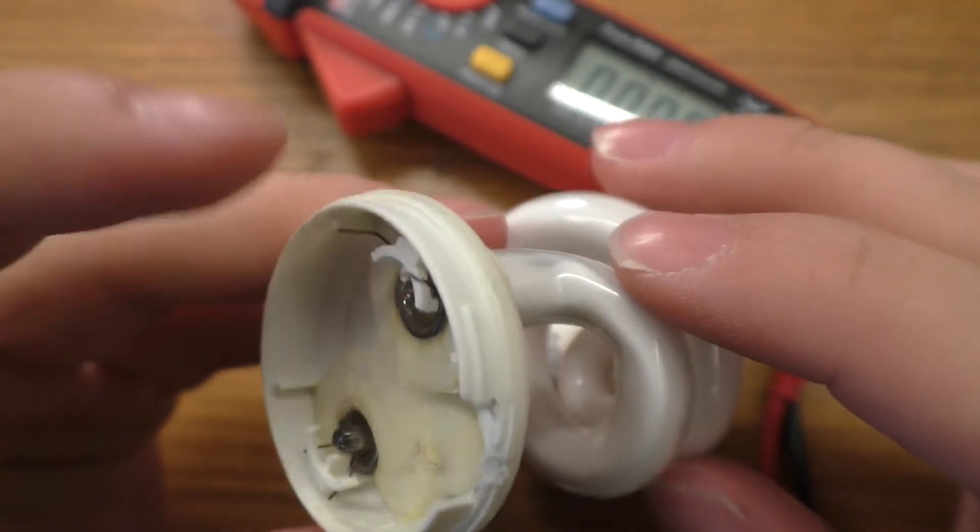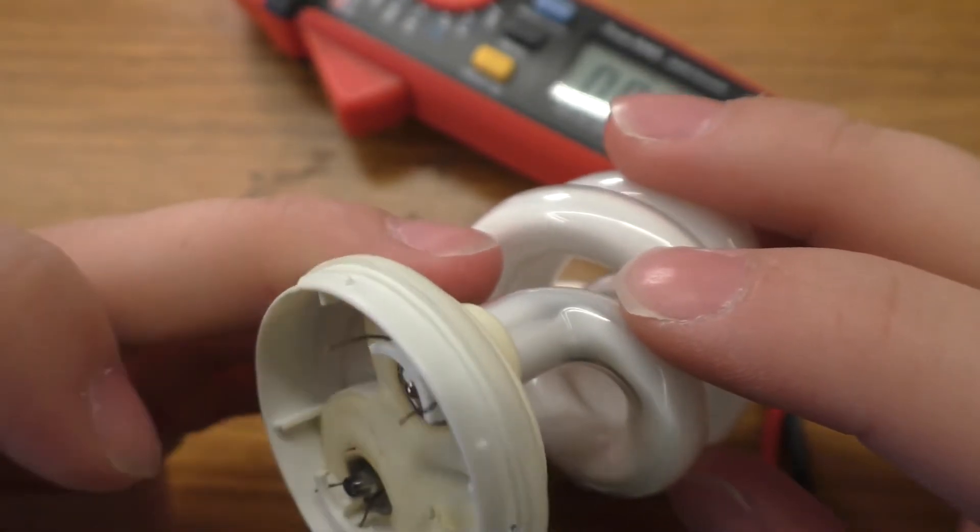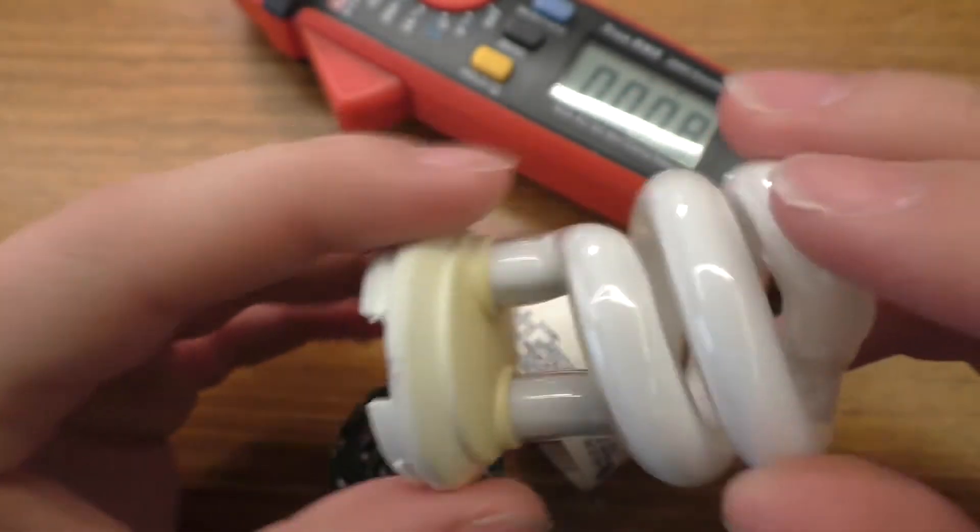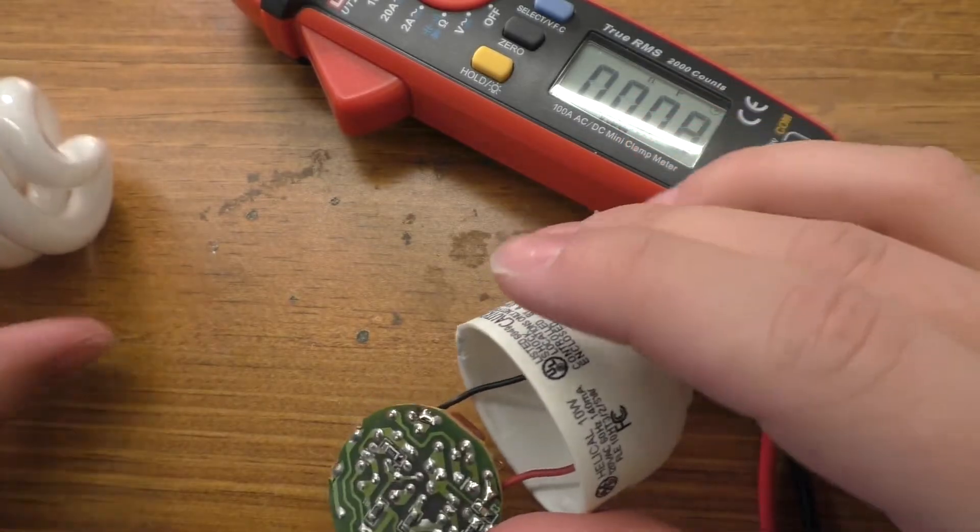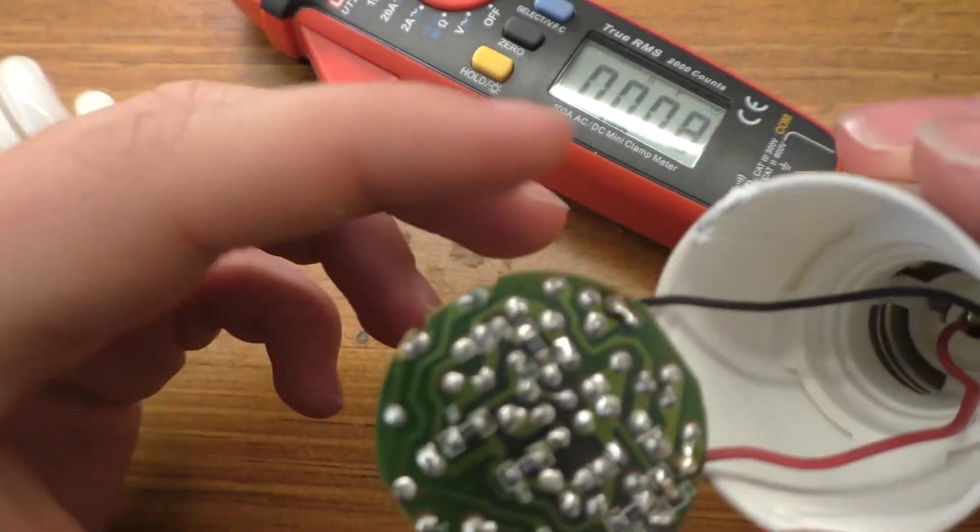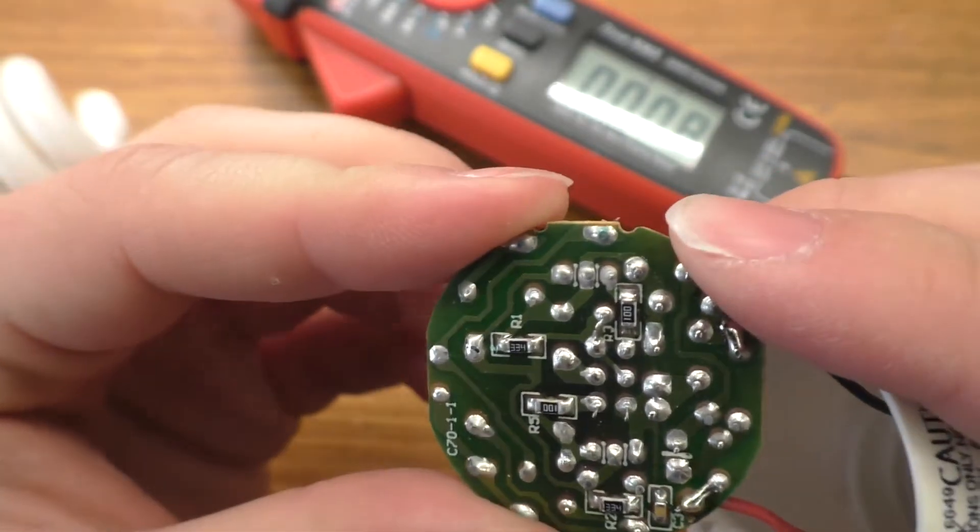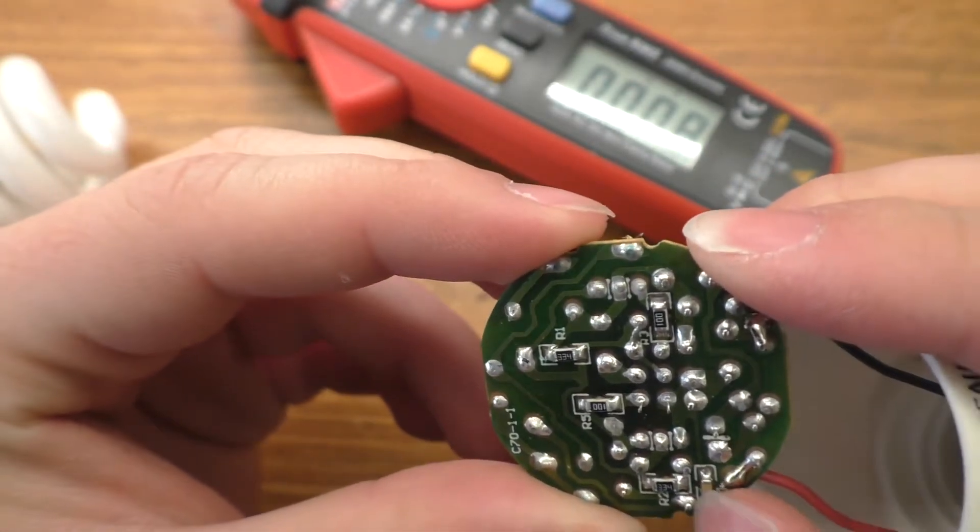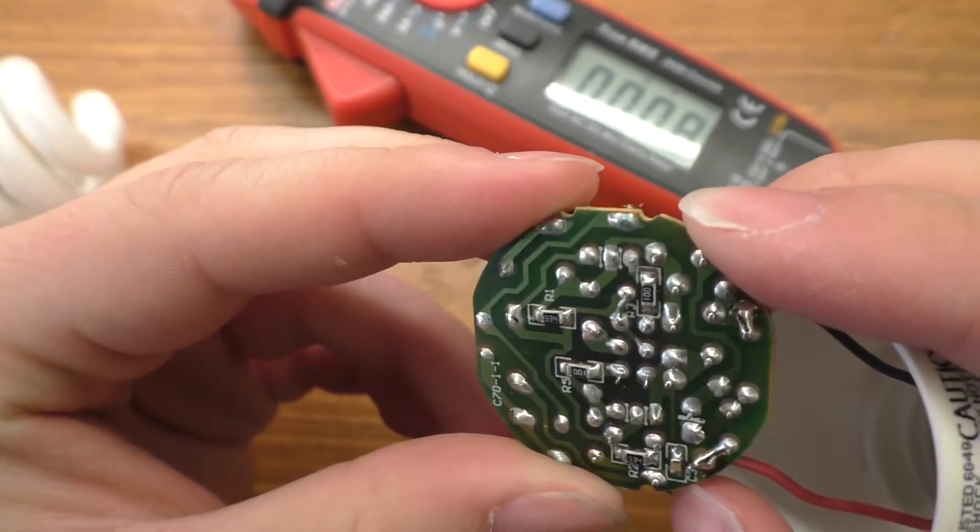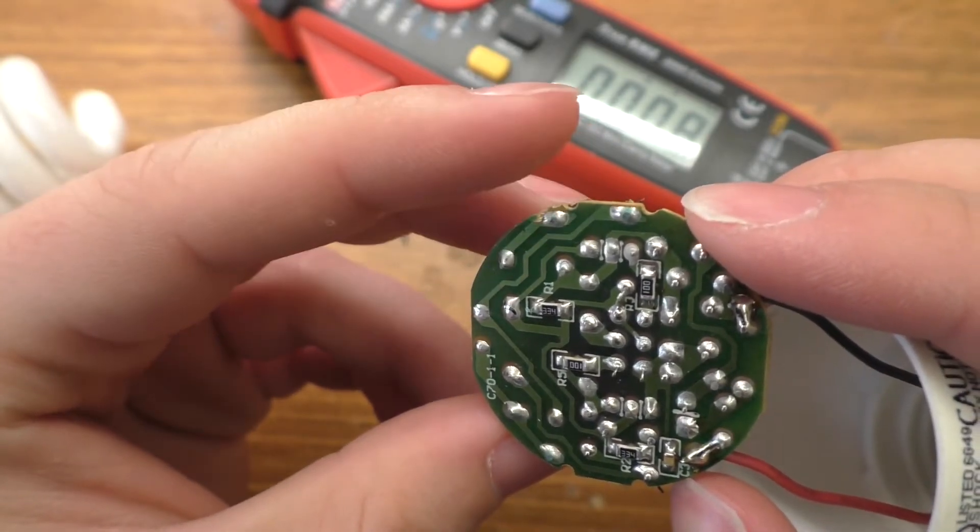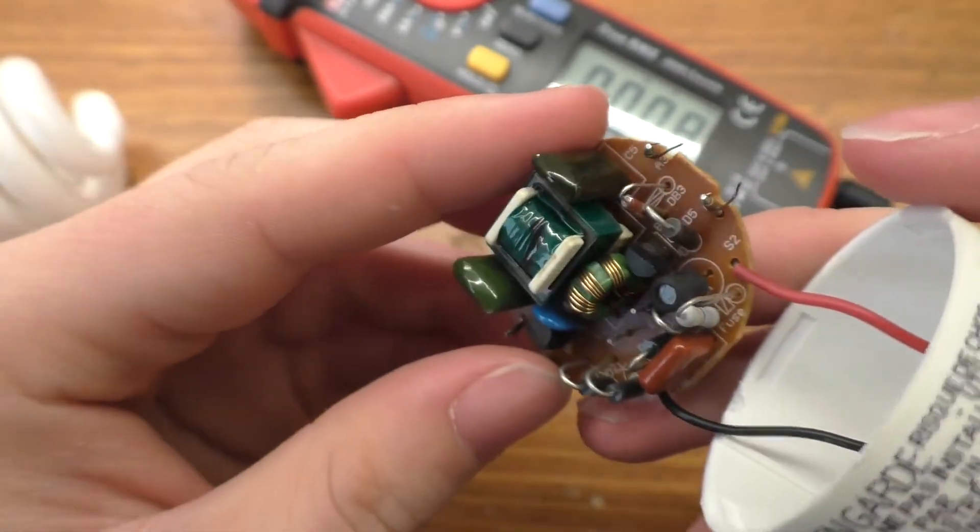And then it's a CFL bulb, it's just got the filaments going down in there. But anyway, the back of this, it's not a lot on it, but there's a couple of resistors here and there and a random cap over there. So nothing too fancy in here.